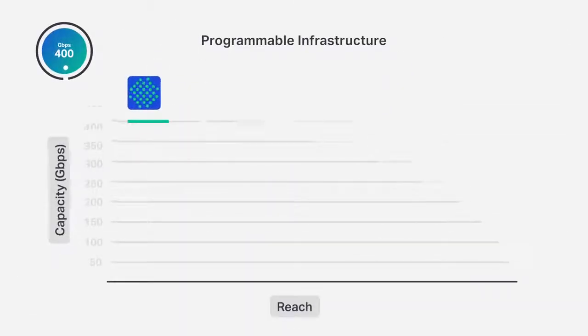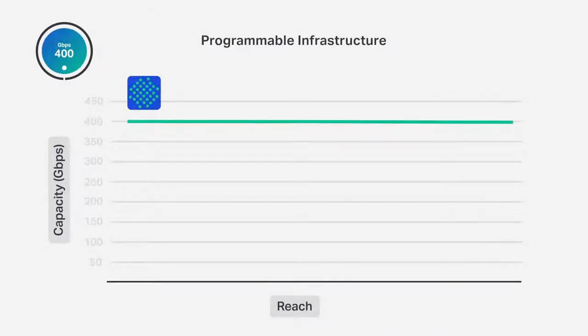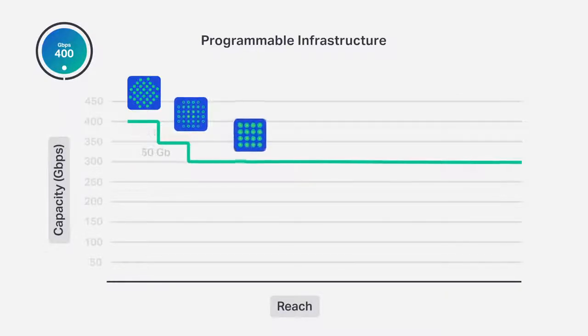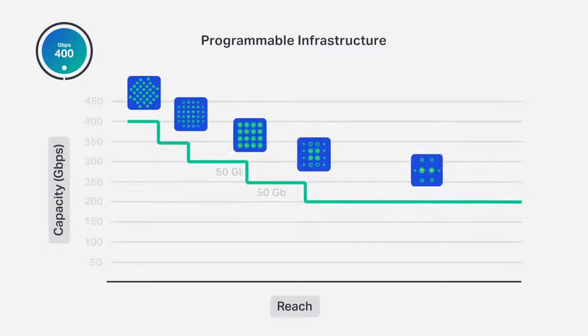The platform should be programmable to allow levels of tunability, such as the ability to change from 100 gig to 400 gigs in steps of 50 gig increments. This way the user can achieve continuous trade-offs between capacity and reach.